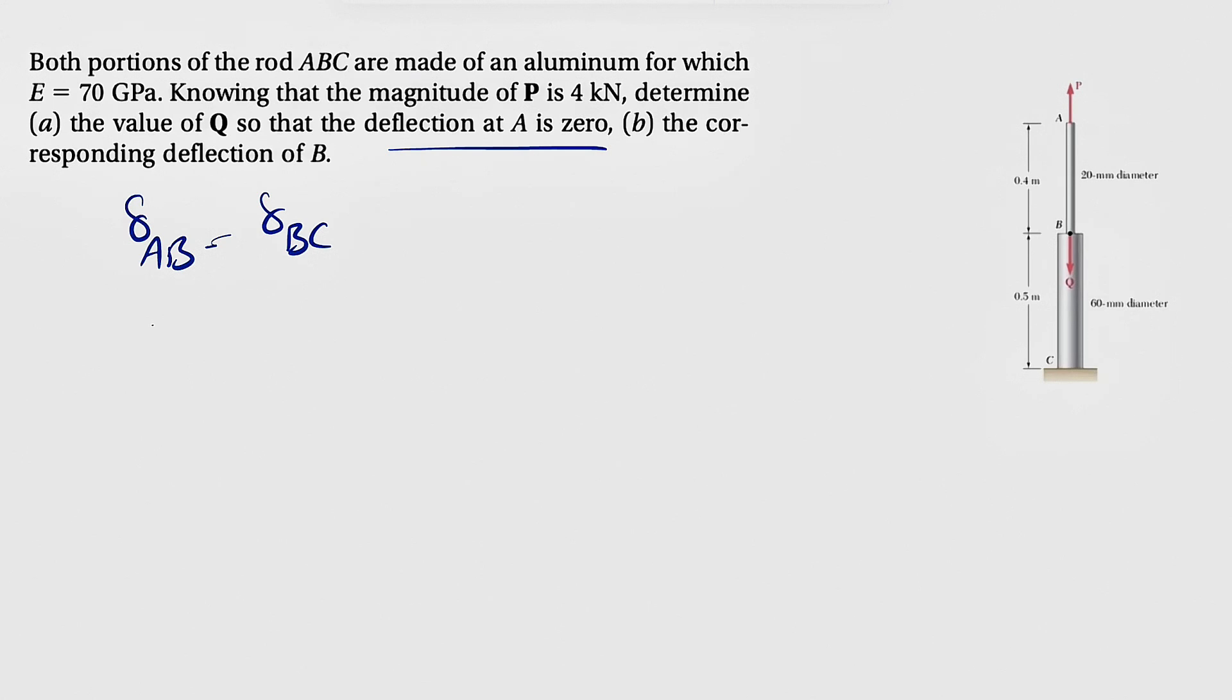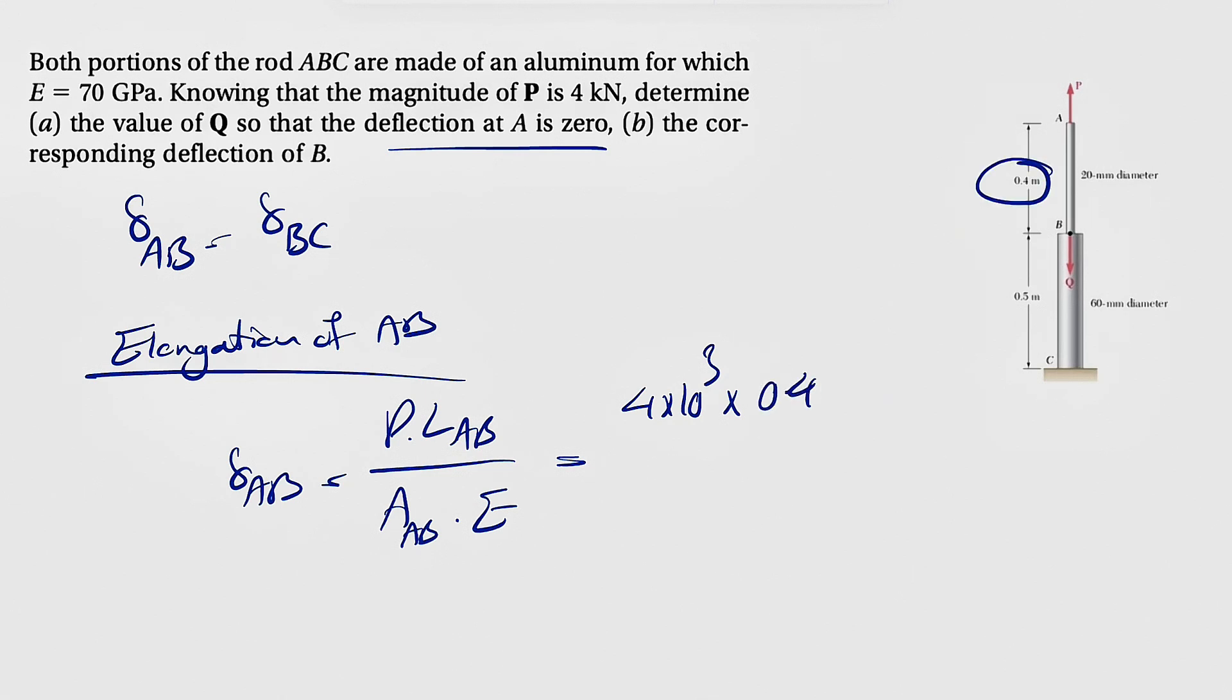Obviously AB will be in tension, so it will be elongated. Based on the elongation of AB, we know this will be equal to P times LAB divided by area of AB times elastic modulus. The force P we know is 4 kilonewtons, or 4 times 10 to the 3 newtons. The length we know is 0.4 meters.